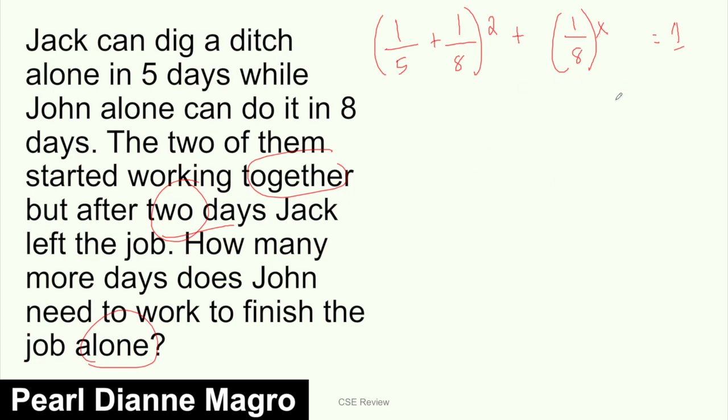Now, how many more days does John need to work to finish the job alone? What does that mean? When they stopped working together after 2 days, John still worked. So there's still a plus. Jack is gone because he doesn't work anymore. So we only have 1/8, and this 1/8, the work John is doing alone, we multiply by X. Because X is the number of days John works alone. This becomes our formula. It's a little more complicated but we can still do this, don't be afraid. We'll take it one step at a time.